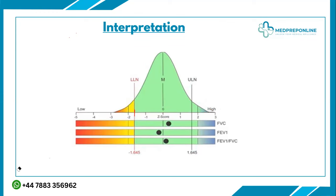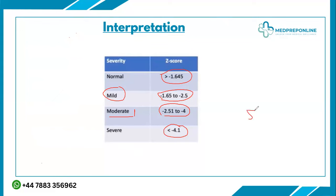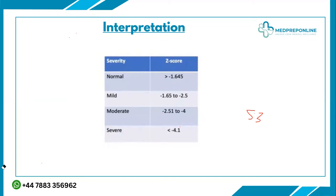For severity based on z-score: normal is greater than minus 1.64. From minus 1.65 to minus 2.5 is mild severity. From minus 2.51 to minus 4.0 is moderate severity. Beyond minus 4.0 — for example minus 5.3 has been seen in past scenarios — indicates very severe disease. This applies to any parameter: TF, DLCO, FVC, or the ratio.